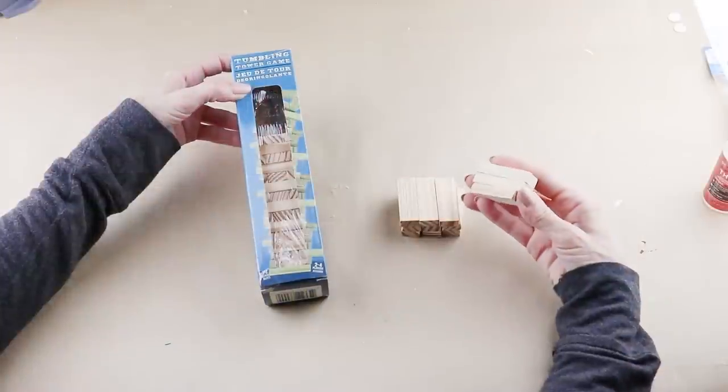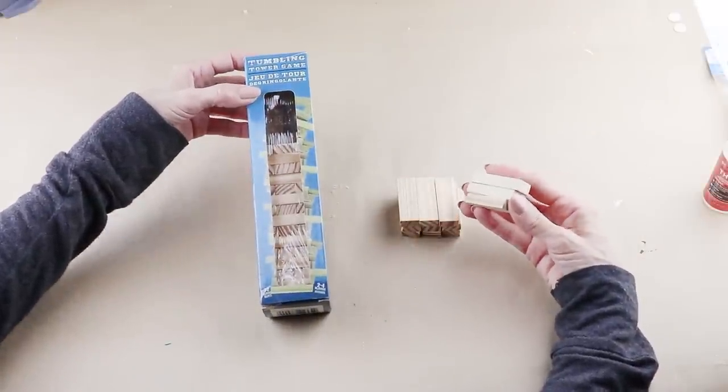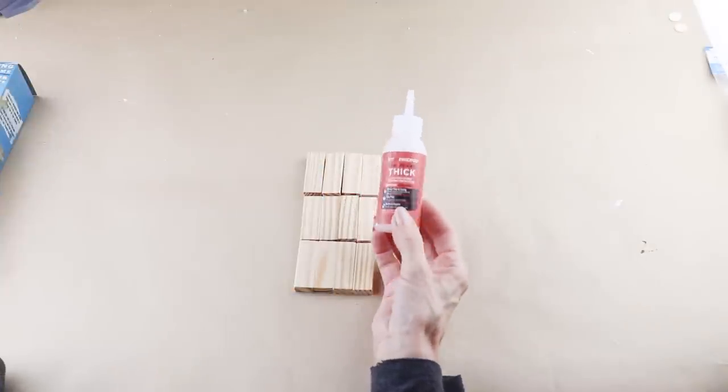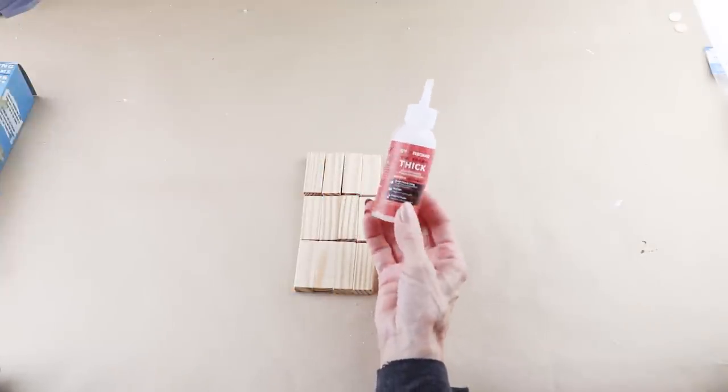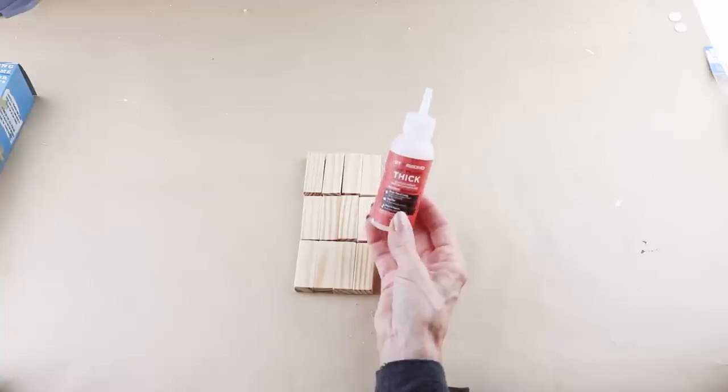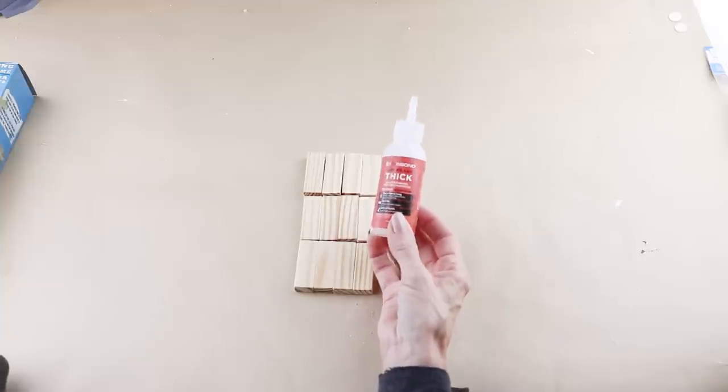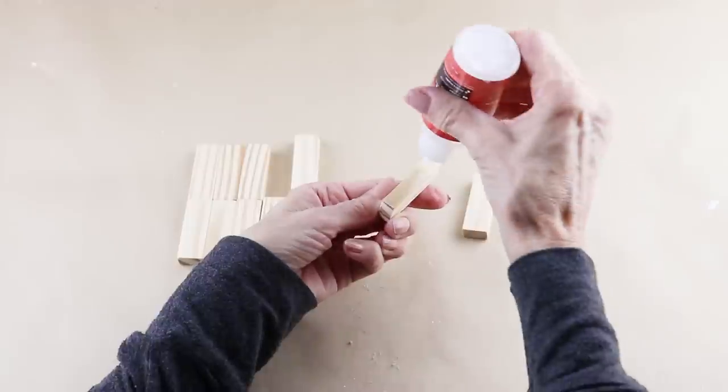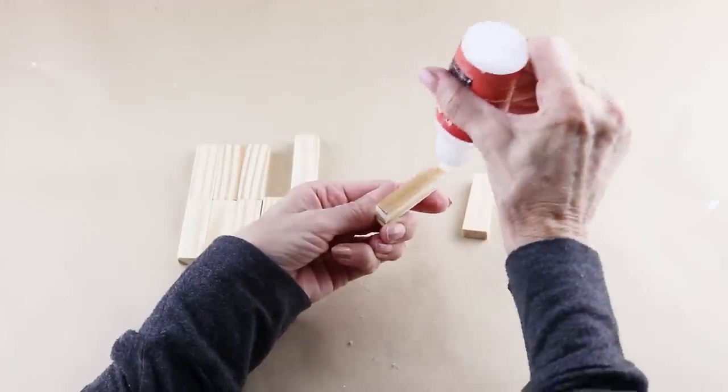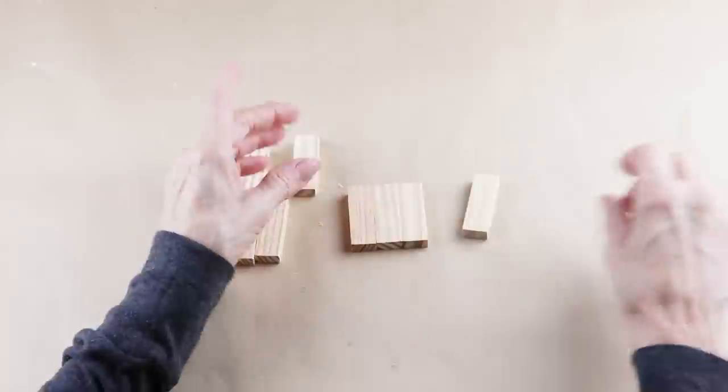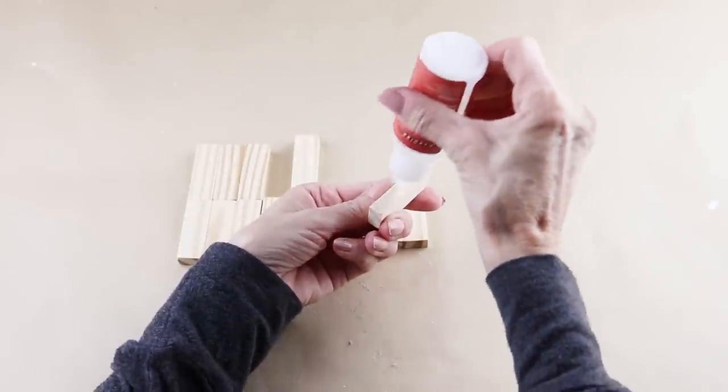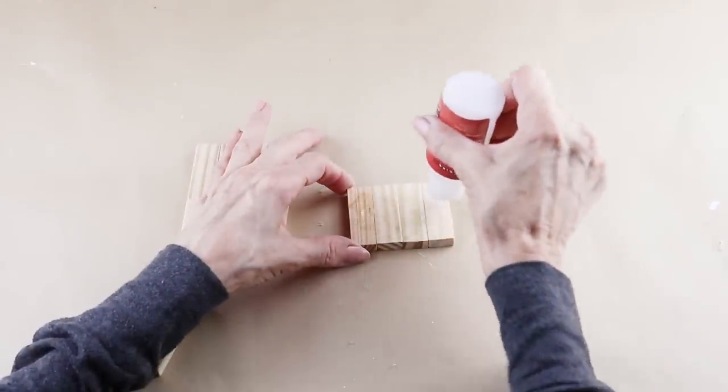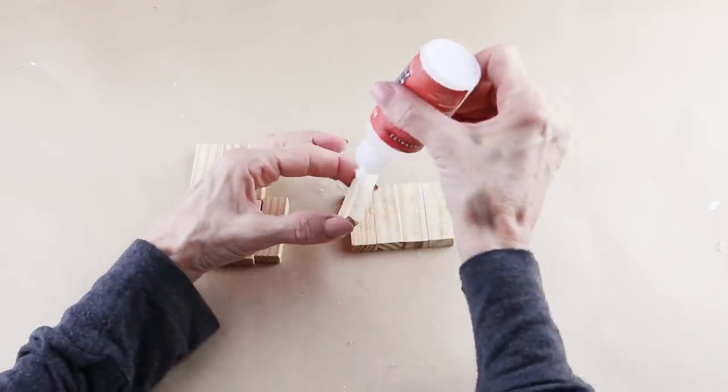To make the base for my scarecrow, I'm using 12 of the Tumbling Tower blocks from the Dollar Tree. I'm attaching them together with my Starbond Thick Glue. I absolutely love this glue because it sets natural wood up super quick and I have the company linked below in case you'd like to check it out. Using my glue, I'm now attaching the blocks side by side in rows of four.